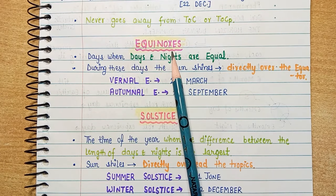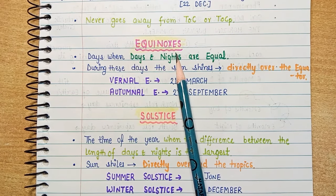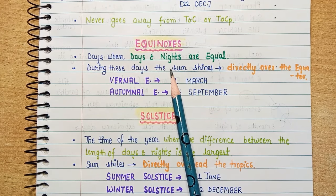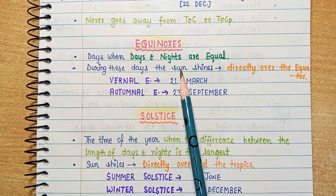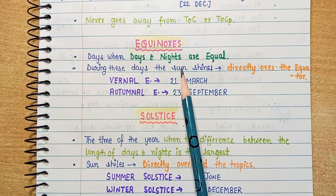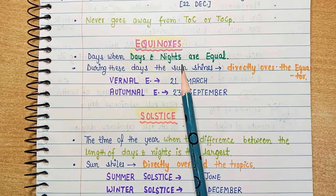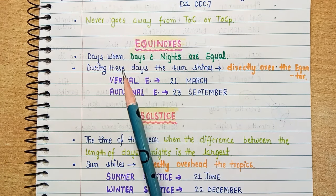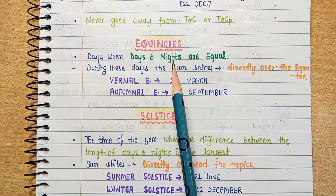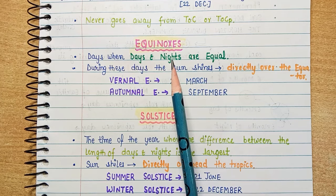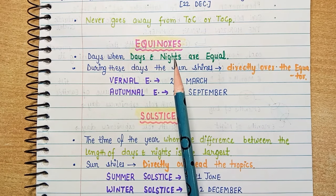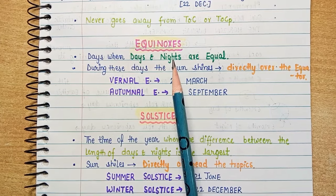We were talking about equinoxes. Before moving forward, there is one more thing to tell you — if you want, you can also purchase my handwritten notes. You can get notes at an affordable rate. Though I would recommend that you make your own notes, but in case you are doing a job, taking a course, or going to college and don't have time to make notes, then it would be better if you purchase my handwritten notes.